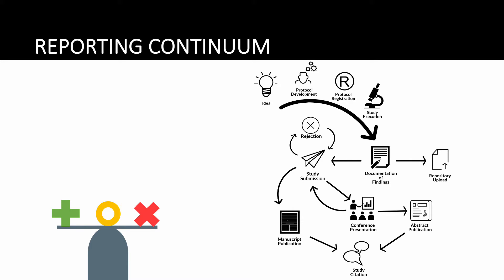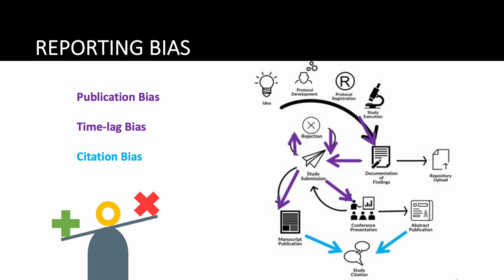Reporting bias occurs when the magnitude or direction of a study's results has undue influence on the likelihood of publication, time to publication, or number of times cited. For example, let's say 10 high-quality studies evaluate the accuracy of ultrasound for diagnosing appendicitis. Assume that half conclude ultrasound is highly accurate and the other half find it's suboptimal. If all positive studies are published within 6 months but negative studies take up to a year, this results in timeline bias.